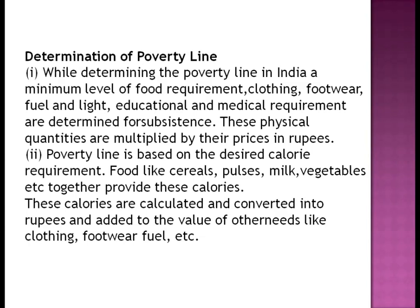Determination of the poverty line: while determining the poverty line in India, a minimum level of food requirement, clothing, footwear, fuel, light, educational, and medical requirements are determined for subsistence. These physical quantities are multiplied by their price in rupees. The poverty line is based on desired calorie requirement. Food like cereals, pulses, milk, vegetables etc. together provide these calories, which are calculated, converted into rupees, and added to the value of other needs like clothing, footwear, and fuel.